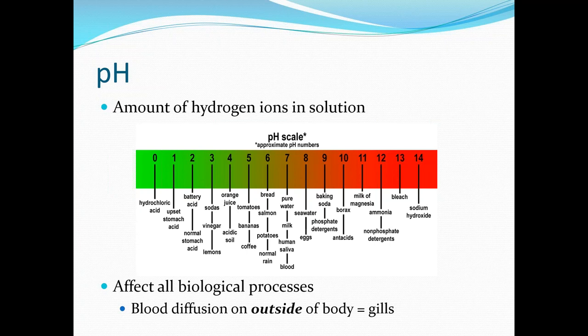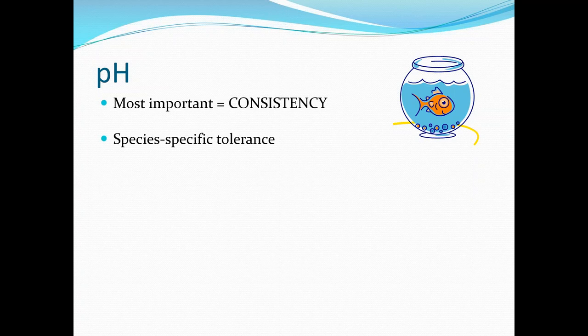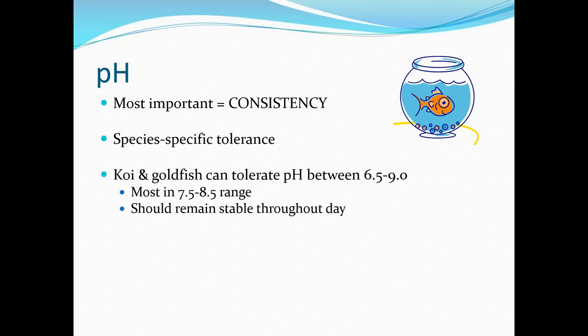These hydrogen ions are very important because they affect all biologic processes, both internal and external. Keep in mind that blood diffusion of hydrogen ions occurs on the outside of the body in fish, specifically at the gills, so anything floating around in the water will have an immediate direct impact on any fish swimming in it. The most important thing to consider with pH is consistency — you want a pH that is not going to change over the course of the day, week, or months. For those with koi and goldfish, they can tolerate a pH between 6.5 and 9; most systems are between 7.5 and 8.5.